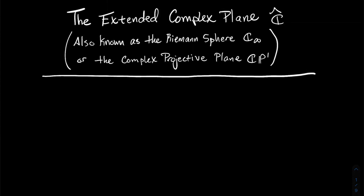This is a video about the extended complex plane, denoted by ĉ. It's also known as the Riemann sphere, sometimes denoted by C sub-infinity, or the complex projective plane, sometimes denoted by CP1.